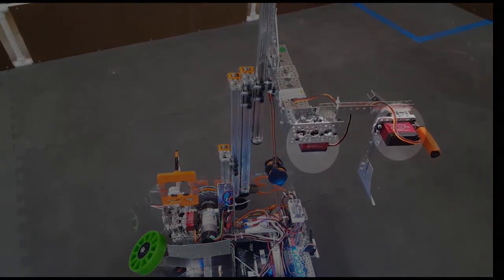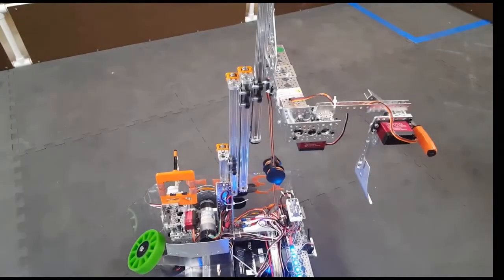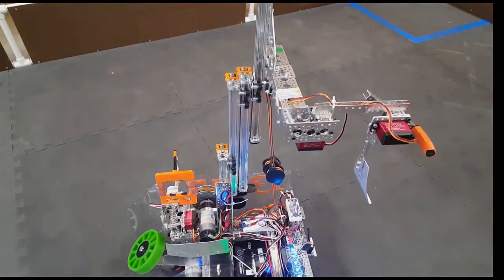The full claw is controlled by two servos: one to pivot the claw around and another to make the claw grip down.